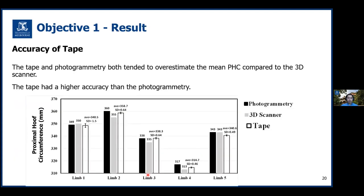This slide compares the accuracy of the tape with photogrammetry and the 3D scanner. The black columns are for photogrammetry, gray is the 3D scanner, and white is the tape. Pairwise correlations between the 3D scanner and the other two methods showed that both tape and photogrammetry tended to overestimate the mean PHC compared to the 3D scanner. However, through the application of statistical analysis on several trials, it was concluded that the conventional tape measurements would yield higher accuracy than the photogrammetry.